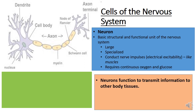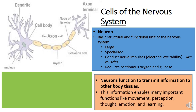Neurons function to transmit information to other body tissues — that's their whole purpose. This gives us the ability to do things like movement, perceive our environment, think, have emotions, and learn. All of these abilities come from the neuron's ability to transmit. The other key cell type is the neuroglia, which supports and protects the neurons — they are all about helping those neurons.